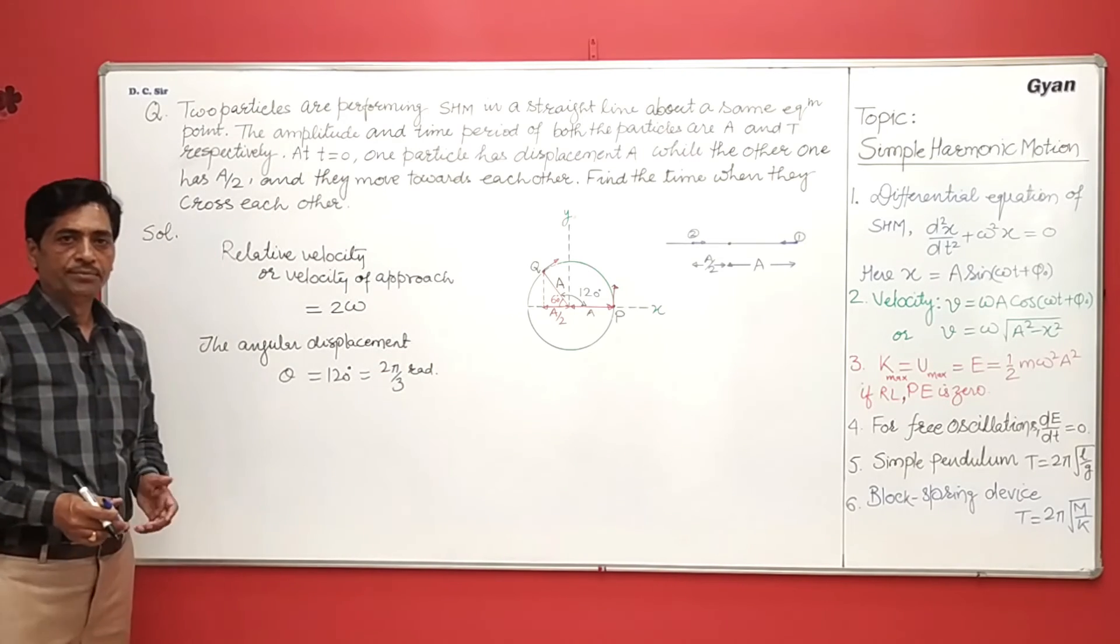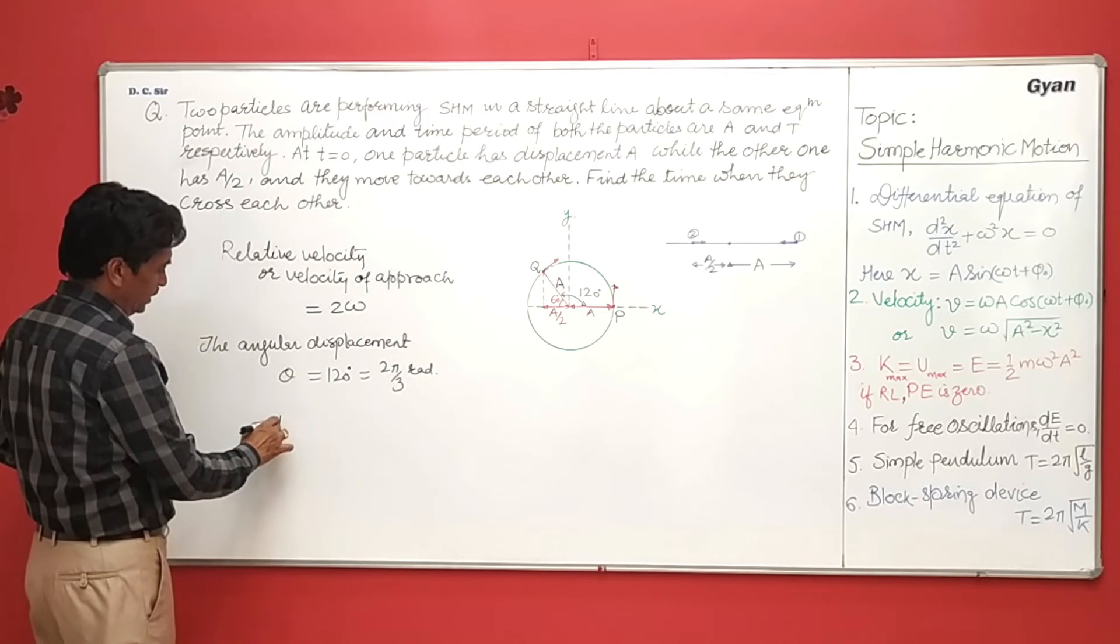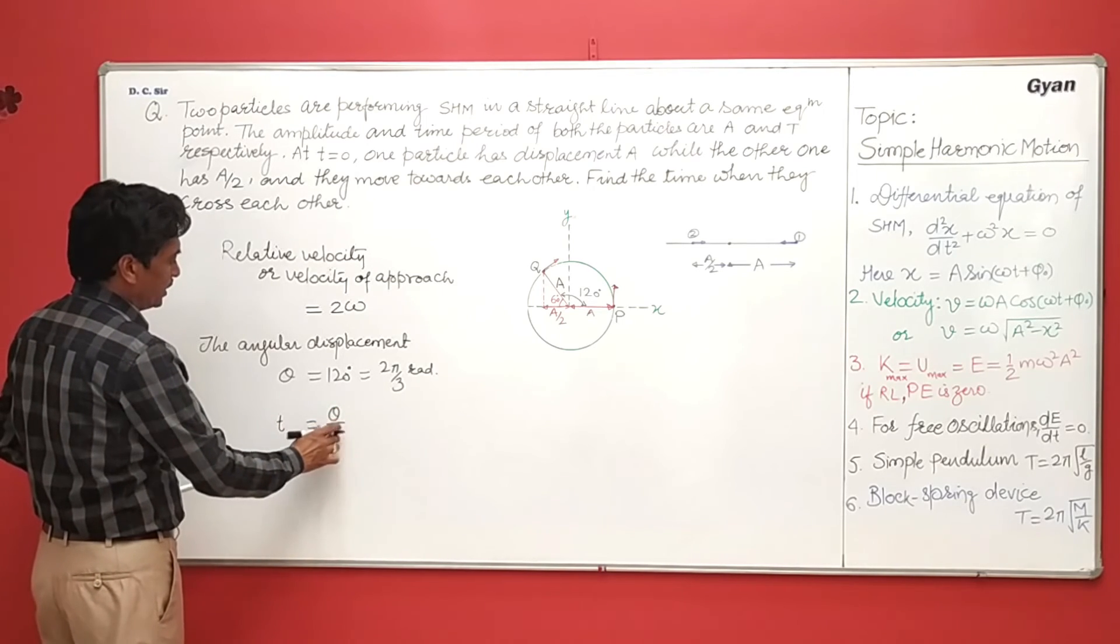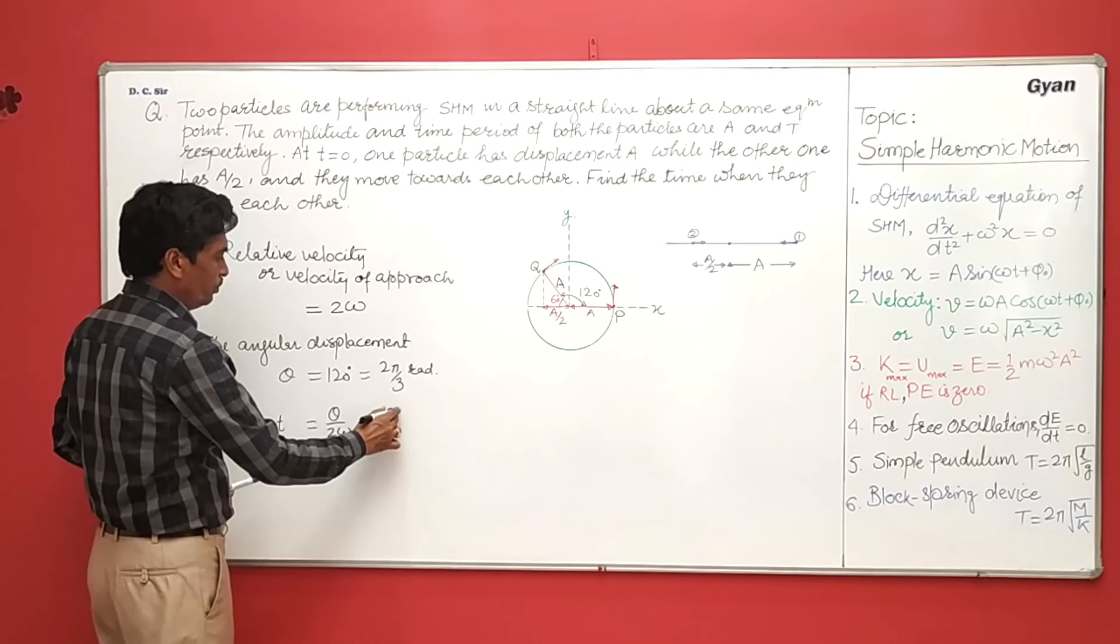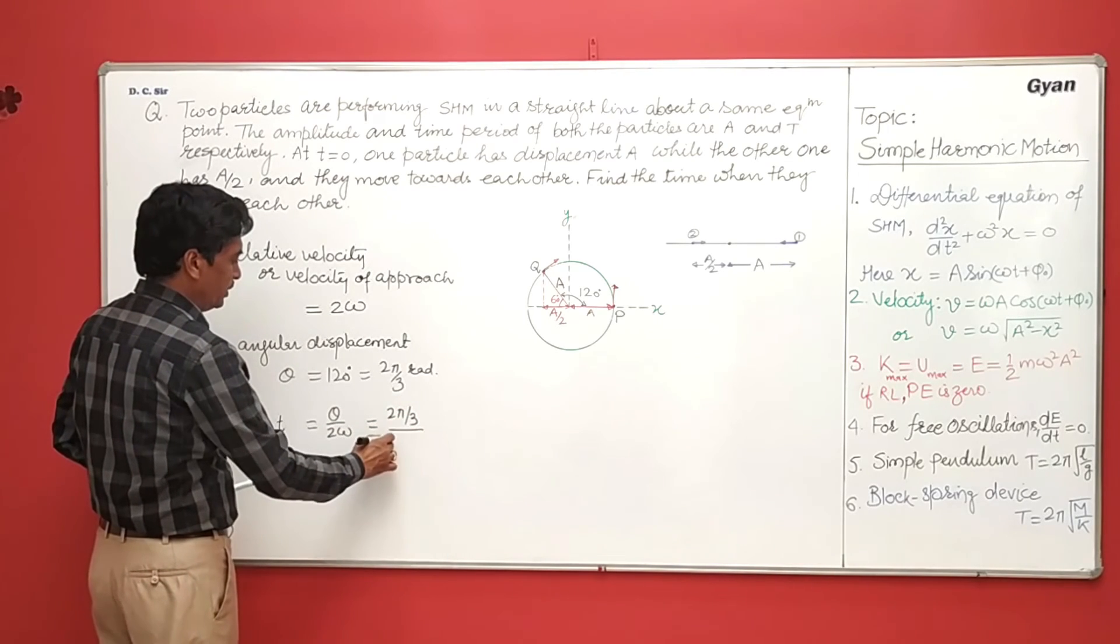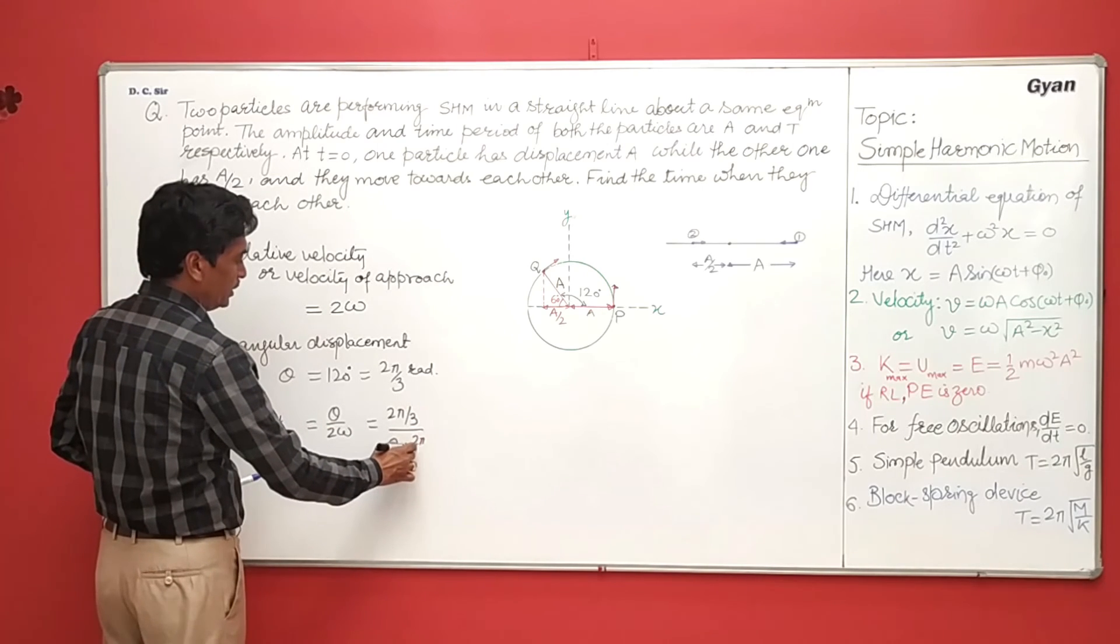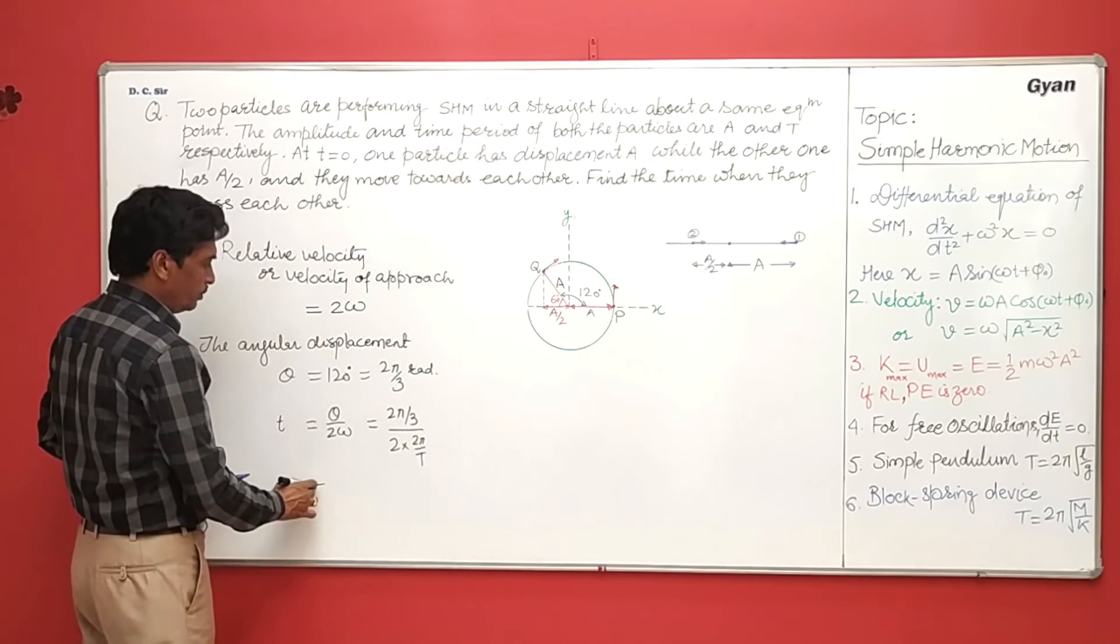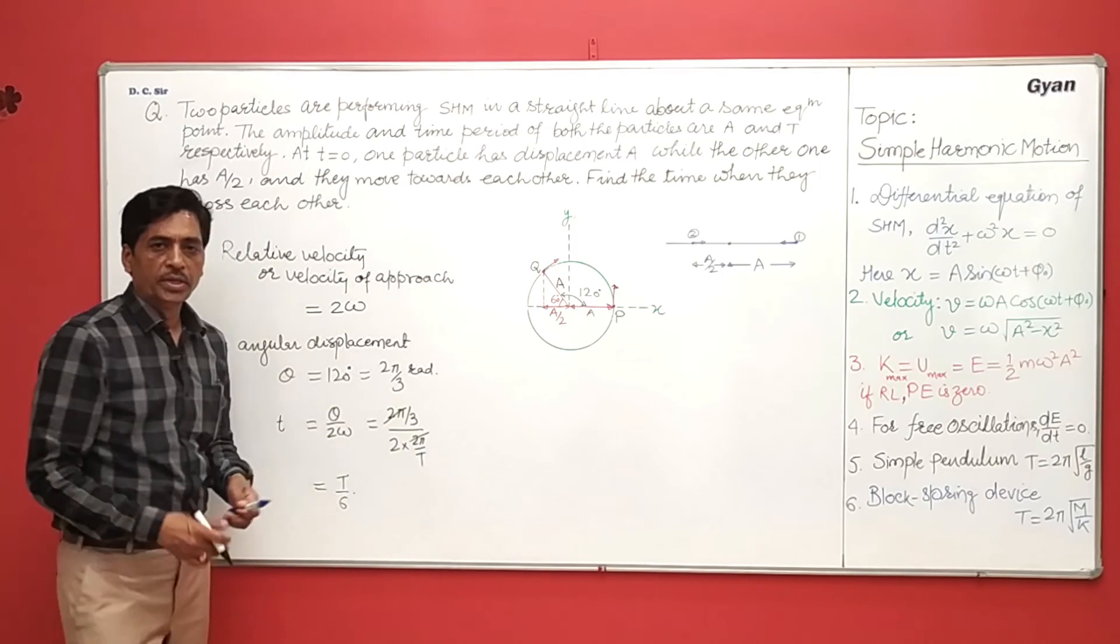So if t is the required time, then we can get t equals theta divided by 2 omega. So it will be 2 pi by 3 divided by 2 omega. If t is the time period, this simplifies to t by 6.